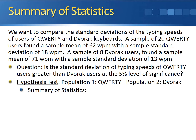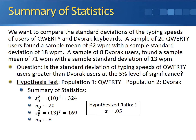Here's a summary of all our statistics. The sample variance of the QWERTY users is 18 squared, which is 324, and their sample size is 20. The sample variance for the Dvorak users is 13 squared, which is 169, and their sample size is 8. Note also that the hypothesized ratio for this test is 1, and we're performing the test at the 5% level of significance.